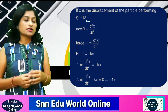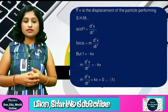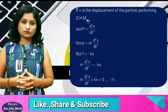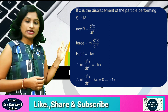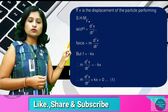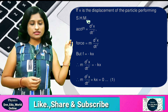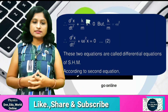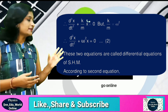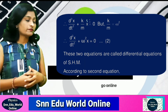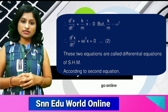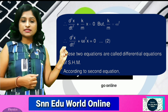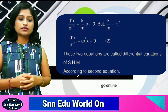Now we solve this. Bringing minus kx to the left side gives plus kx equals 0, so the equation becomes m times d²x/dt² plus kx equals 0. To simplify further, we divide the whole equation by m, giving us d²x/dt² plus (k/m)x equals 0.